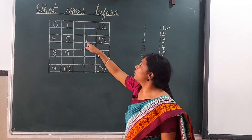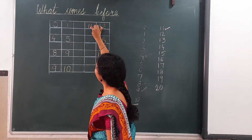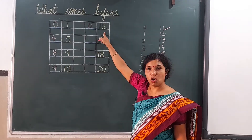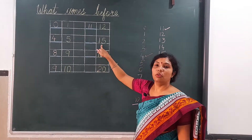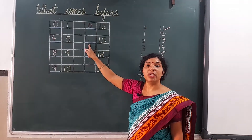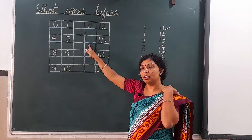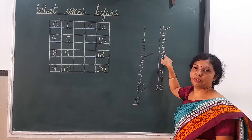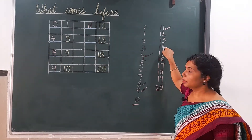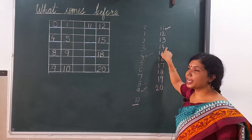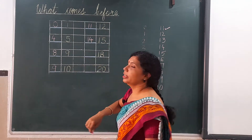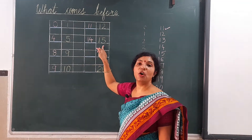So we will write here 11. It means 11 comes before 12. Next it is 15. Now which number comes before 15? Here it is written 15 and before 15, 14 comes. So we have to write here 14. It means 14 comes before 15.